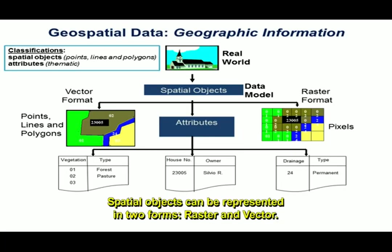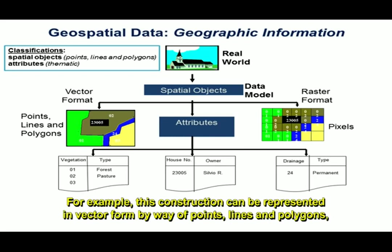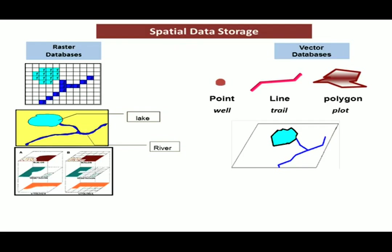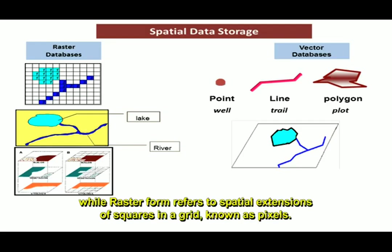Geospatial objects can be represented in geographic information systems in the form of raster and vector. For example, this construction shown here can be represented in two ways: as vector, generated by points, lines, and polygons; or in raster form, by dividing the space into a matrix of pixels.